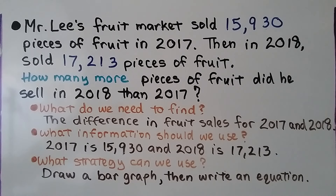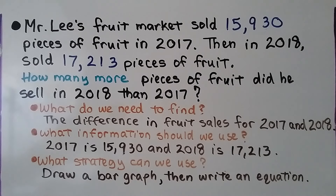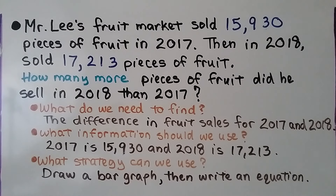Mr. Lee's fruit market sold 15,930 pieces of fruit in 2017, then in 2018 sold 17,213 pieces of fruit. How many more pieces of fruit did he sell in 2018 than 2017? So what do we need to find? The difference in fruit sales for 2017 and 2018. What information should we use? That 2017 is 15,930 and 2018 is 17,213. And what strategy can we use? Draw a bar graph, then write an equation.